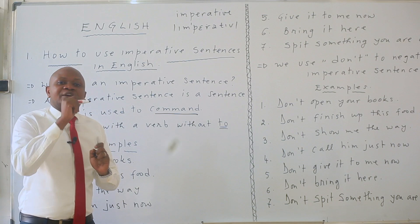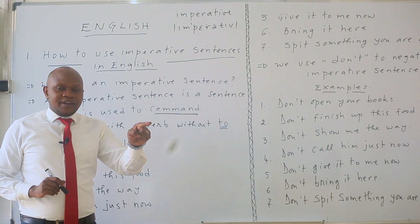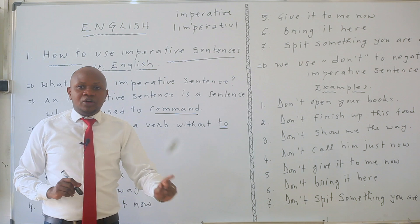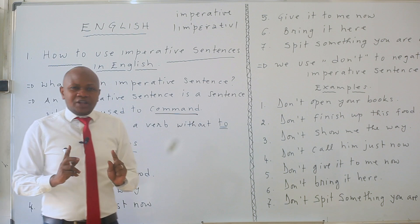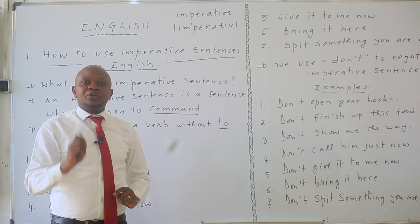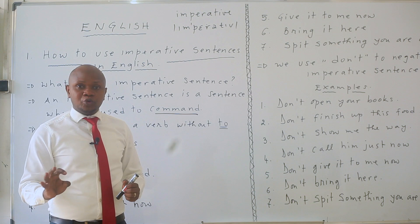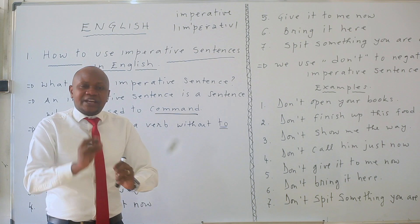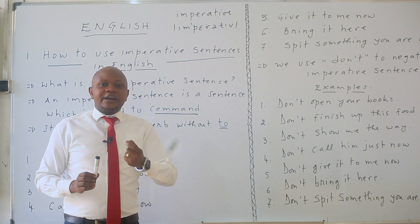Go there just now. Come here right now. Those are imperative sentences. Don't say 'to come here' — you remove the 'to.' So you say: come here right now, go there just now, bring that food just now, eat or finish up this food. Which means that I am commanding this time.